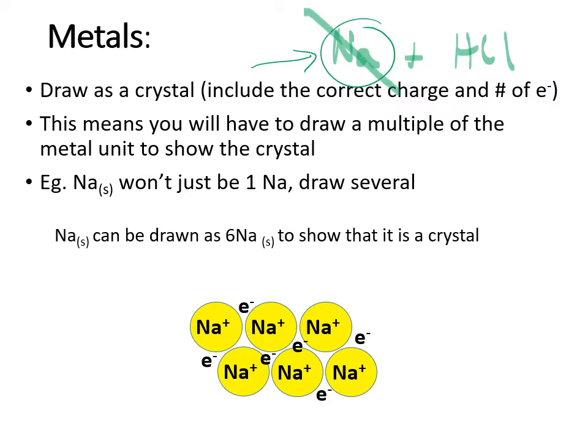Drawing six sodium atoms would be a much better portrayal of what sodium is like than trying to draw it as if it were a noble gas — that is not a good way to think of metals. Also remember they have this electron sea of shared electrons around them, so if you communicate that with your drawing you get even more information about what the actual properties of that metal are like. When you see sodium drawn that way, you immediately understand why it's conductive.